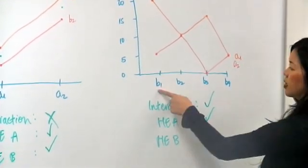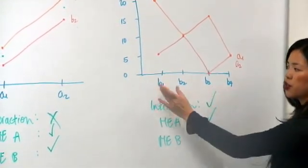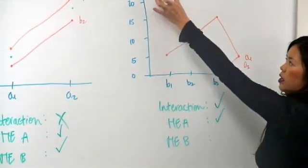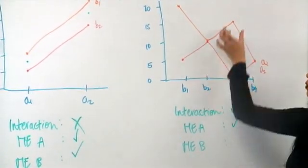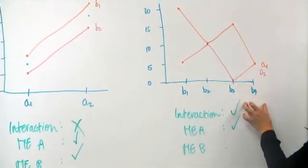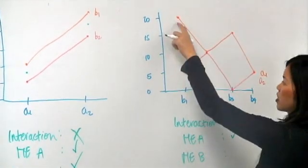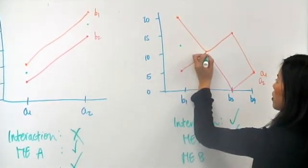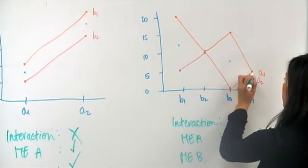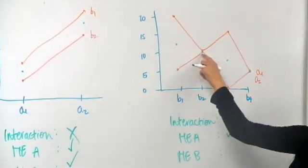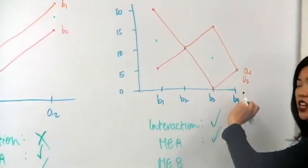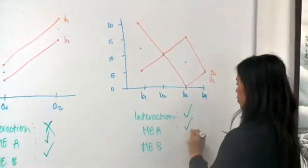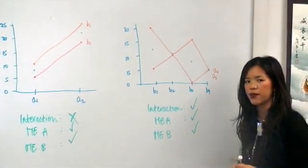With main effect B, that's going to be down here. We're looking at the domains. Everything that falls within B1, within B2, within B3, and within B4. So we're going to average these out, just roughly. So it's going to fall around here, here, here, and here. Now it goes downwards, which means that it's changing over time. So we also have reason to suspect that we might have a main effect for B.